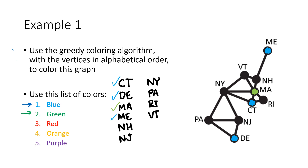Now we have New Hampshire. New Hampshire is connected to Maine, so it can't be blue. It's also connected to Massachusetts, so it can't be green. So now we're forced to use the third color on our list, which is red. Because New Hampshire is connected to both Maine and Massachusetts, we can't use blue and we can't use green, so we have to use red. But now New Hampshire is colored.